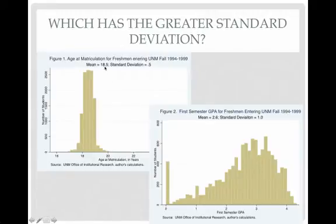Is that big or small? Well, relative to the mean, that's pretty small. So it's this tight distribution here. Let's look at figure 2 from the same data set. This is the first semester GPA for freshmen entering fall during that period. The mean is 2.6 and the standard deviation is 1.